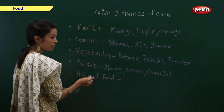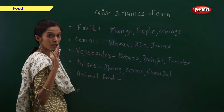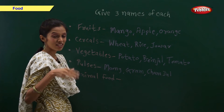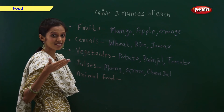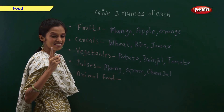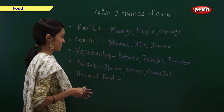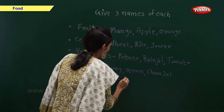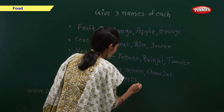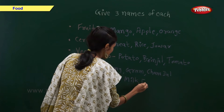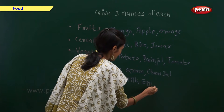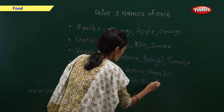Now give me three examples of animal food. Three examples, fast. Remember, I told you earlier. Yes — milk, eggs, and fish.